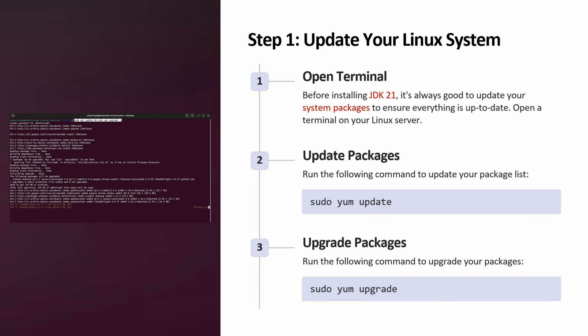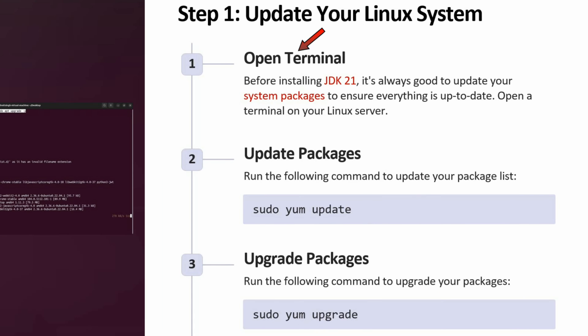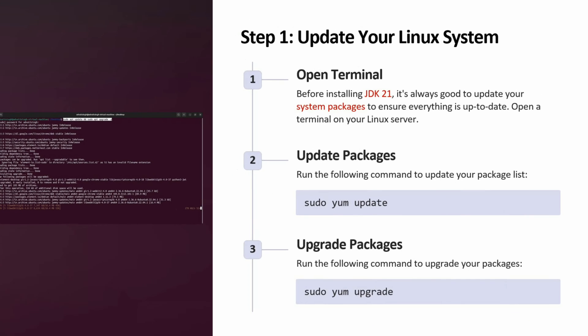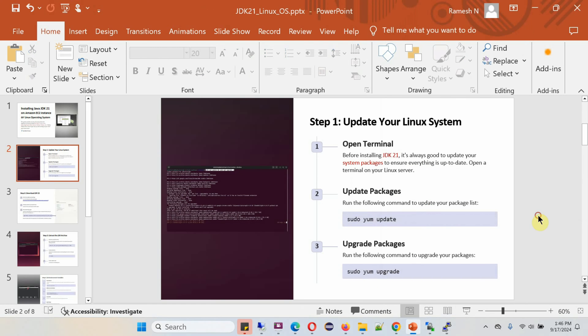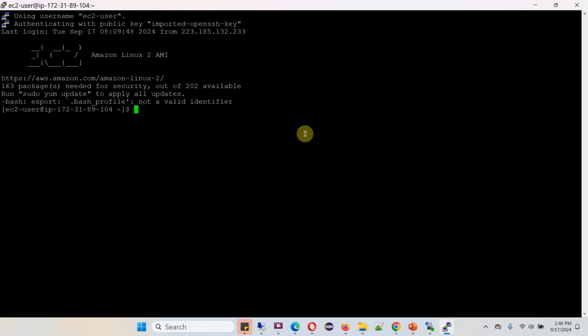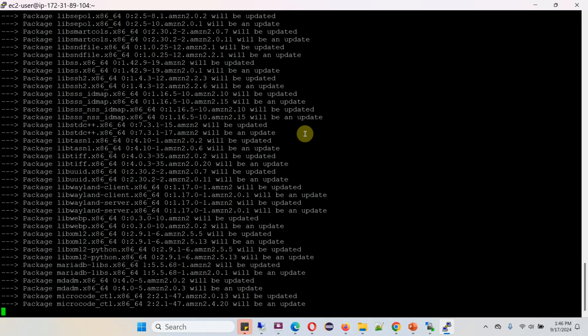Step 1 is to update your Linux system. Before installing JDK 21, it is always good to update your system packages to ensure everything is up to date. Open a terminal on your Linux server. To update the packages, run the command sudo apt update. To upgrade packages, run the command sudo apt upgrade. Run the command sudo apt update.